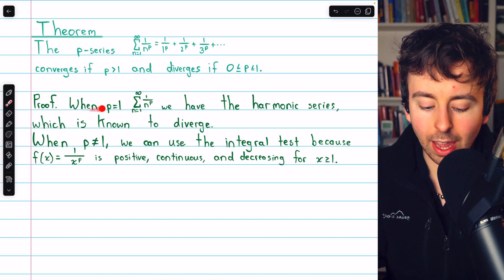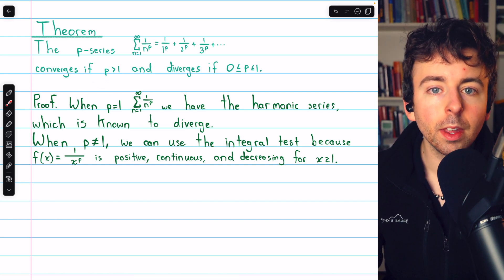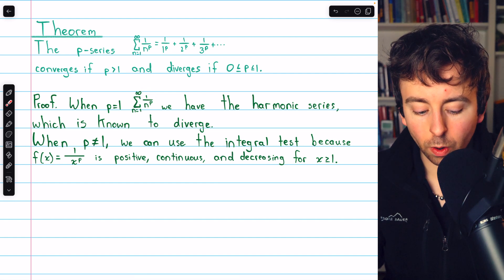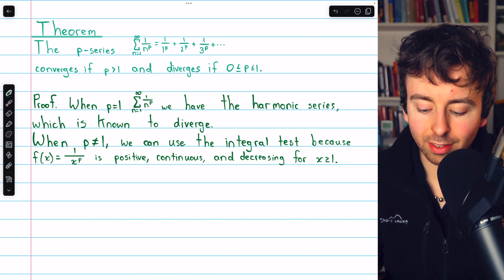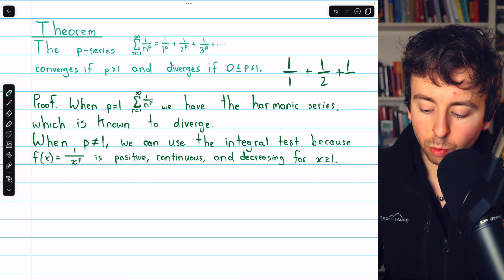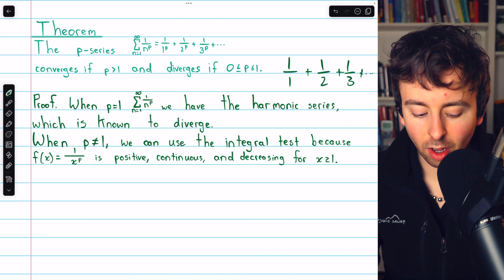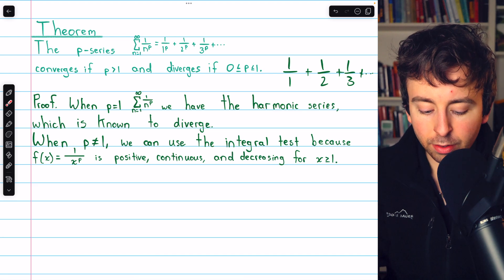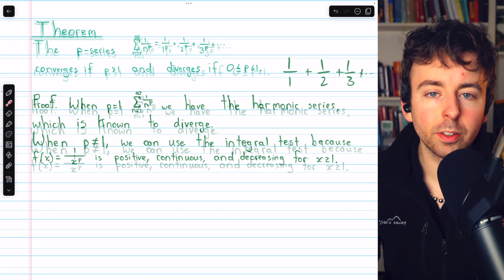Let's start with the case when p equals 1. If p equals 1, the corresponding p-series is just the harmonic series: 1 over 1 to the 1, plus 1 over 2 to the 1, plus 1 over 3 to the 1, and so on. It's the harmonic series, which we know to diverge.